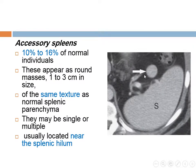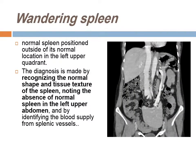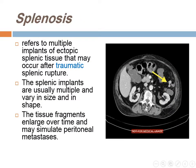Accessory spleen occurs in 10 to 16% of normal individuals, appearing as round masses of 1 to 3 cm with the same texture as the spleen, single or multiple, mostly near the splenic hilum. Wandering spleen: diagnosis is made by recognizing the normal shape and tissue texture of the spleen, noting absence of a normal spleen in the left upper abdomen, and identifying blood supply from splenic vessels. Spleenosis refers to multiple implants of ectopic splenic tissue that may occur after traumatic splenic rupture. The implants are usually multiple, variable in size and shape, and are sometimes mistaken for peritoneal metastasis.